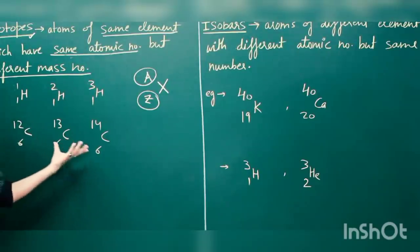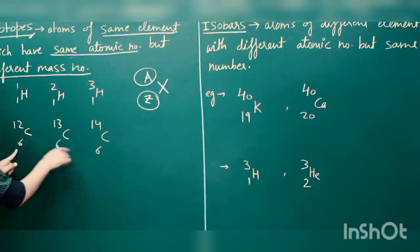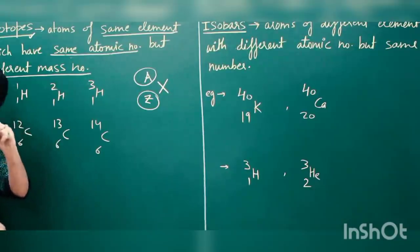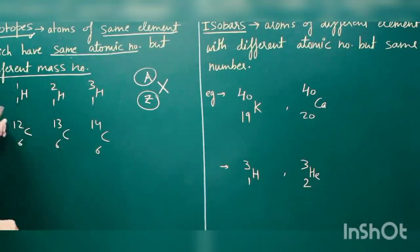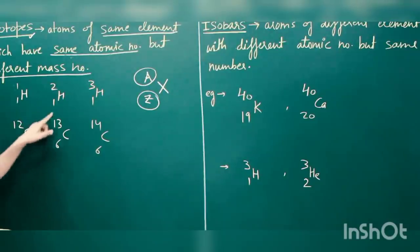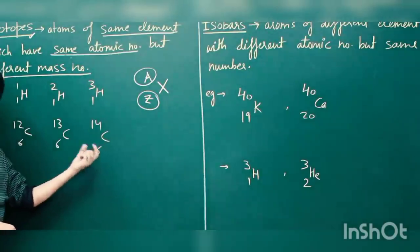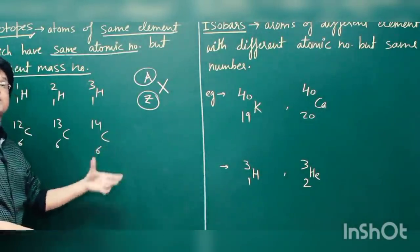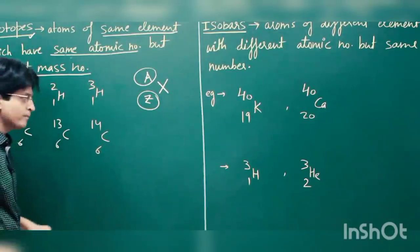Let us take a second example: carbon. Carbon has three isotopes, each having atomic number 6, meaning 6 protons, but different mass numbers: 12, 13, and 14. The carbon-14 isotope is used in carbon dating — in finding out the age of the earth and the age of rocks.